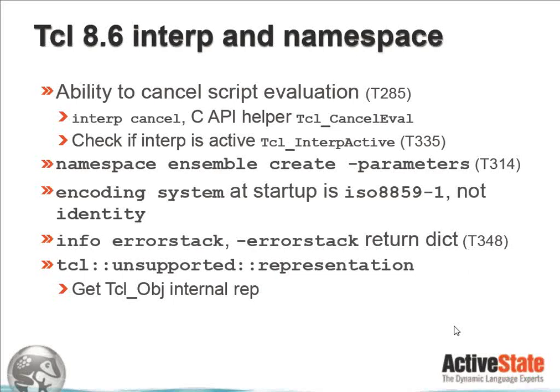Finally, one very important debugging command that has been added is the 'unsupported representation' command. What this does is expose the TCL object's internal representation to the user at the TCL level — basically telling you if you have a pure list, or a list that also has a string representation. This can be very informative if you're trying to do careful optimization and figure out if your commands are shimmering when you're not expecting it.